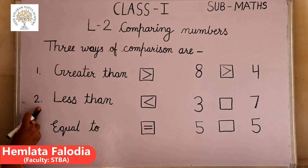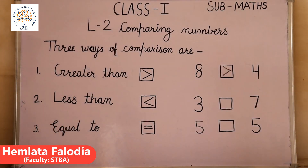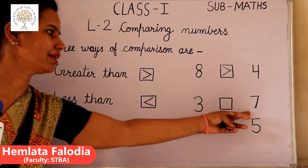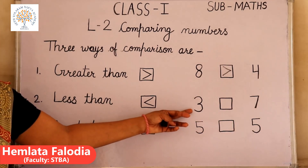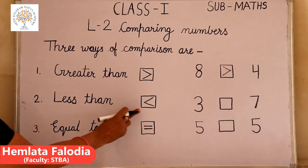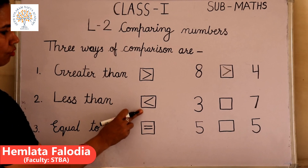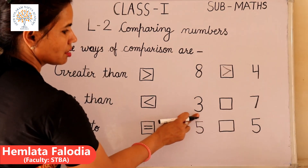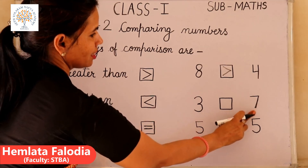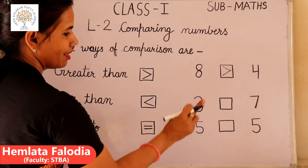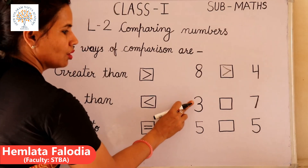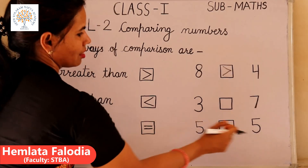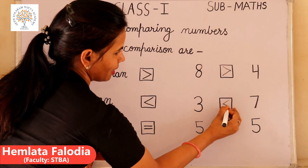Next, come to less than. What is the meaning of less than? If we are comparing two numbers and the first number is less than the second number, it means the first is less than the other. This is the sign of less than. Compare these two numbers: this is number three (first number) and this is number seven (second number). Three is less than seven.